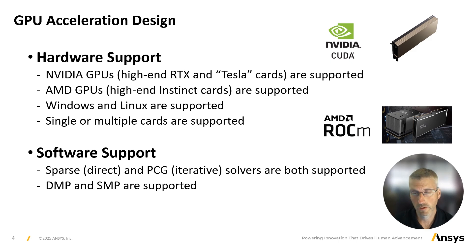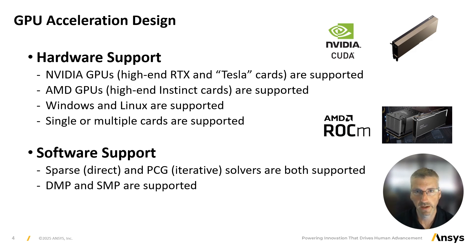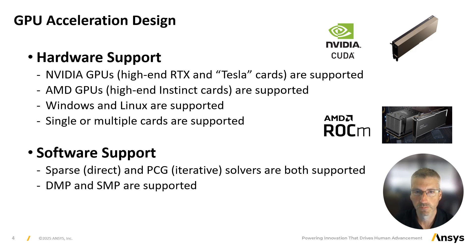In terms of what GPUs are currently supported, the Mechanical APDL product supports both NVIDIA GPUs and AMD GPU cards. Generally speaking, ANSYS recommends using high-end RTX graphics cards designed for workstations, which used to be called the Quadro line, or high-end data center cards like those which used to be called the Tesla series, such as the A100 and H100. For AMD, ANSYS recommends the high-end Instinct line of cards. Regarding software, the main equation solvers are both accelerated on GPUs, and both distributed and shared memory parallel — and even hybrid parallel — can be used with the GPU acceleration feature.